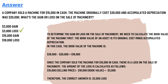The machine is sold for fifteen thousand dollars. Now to find out if it is a loss or a gain — it is very common sense that the original book value is eighteen thousand dollars and we are selling it for fifteen thousand dollars. We are receiving cash of fifteen thousand dollars but the value in our books is eighteen thousand dollars.